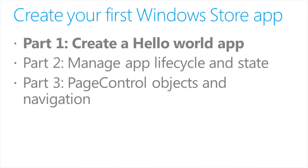We'll show how to create a new project. We'll build some basic HTML for a Hello World page and show how to handle a button click event. Next, we'll show how to switch between the built-in light and dark themes and how to create your own custom CSS styles. And finally, we'll show how to use the Windows Library for JavaScript rating control.